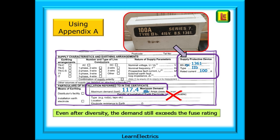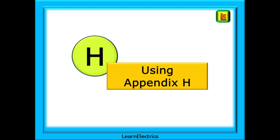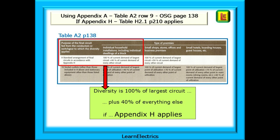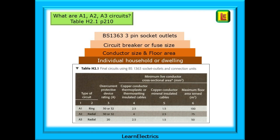Let's start again, and this time use Appendix H — an often overlooked appendix. Look at Row 9 of Table A2 on page 138 of the On-Site Guide. It tells us that under certain conditions, if the circuits comply with Appendix H, and if the installation is an individual household — a single dwelling — and if the socket circuits meet the requirements of Table H2.1 of Appendix H on page 210, then we can use a different diversity calculation. This new calculation is 100% of the largest circuit plus 40% of everything else, but only if Appendix H applies — which it does with our example installation, and very probably will for many houses.